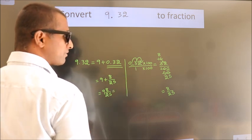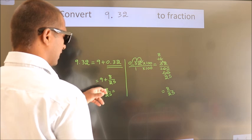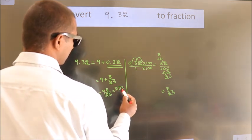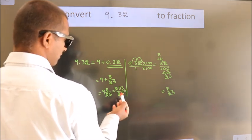And in improper fraction, it is 9 into 25, 225 plus 8. 233 by 25 is our fraction.